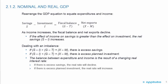Dealing with an imbalance: if S minus I is greater than G minus T plus X minus M, there is excess savings. If S minus I is less than G minus T plus X minus M, there is excess planned investment. The balance between expenditure and income is the result of changing real interest rates. If there is excess savings, the real interest rate will decline. If there is excess planned investment, the real rate will increase.